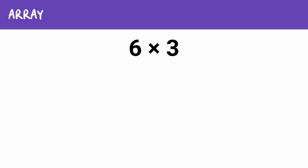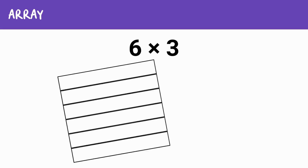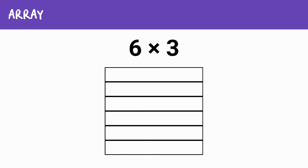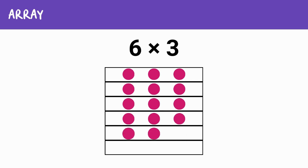Let's try another problem using an array to solve six times three. Imagine you're setting three rows of chairs and each row has six chairs — how many chairs are there? First, let's draw a grid. We want six rows because we're multiplying by six, so we'll have six separate rows stacked one on top of the other. Next, we'll fill each row with three chairs since we're multiplying by three. Let's place three chairs in the first row, then do the same for each of the six rows. Here's our completed array: six rows with three chairs each. To find the total, we can either count them or multiply six by three. So six times three equals 18. Arrays help us visualize multiplication and make it easy to see how the numbers work together.